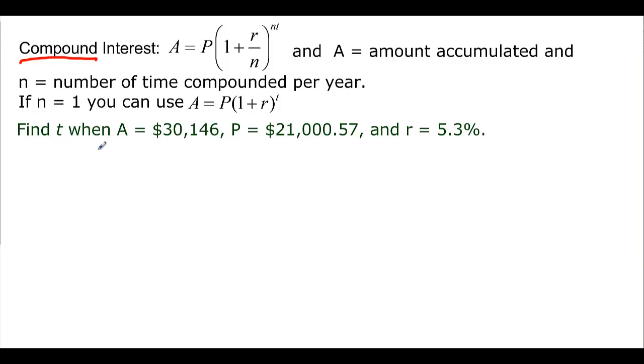So find t when A is 30,146 equal to my P times 1 plus my rate which is 0.053. And it didn't tell me what my n is so we're going to assume the n is 1 to the 1 times my t. It's annual. We're ready to solve now.